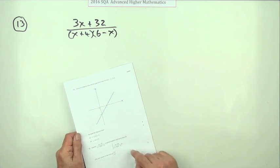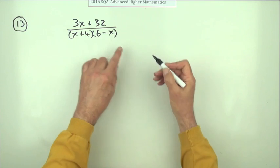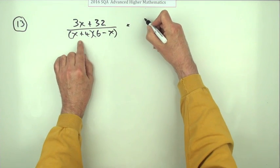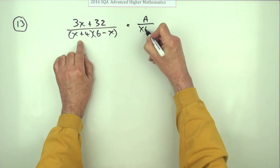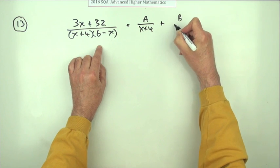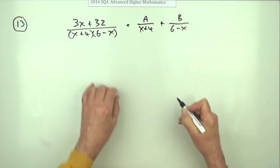First part, don't know how many marks for each part. Express this in partial fractions. Well, it's been factorised for you. Thank you very much. So that means it can be represented as some number over x plus 4 plus some number over 6 minus x.